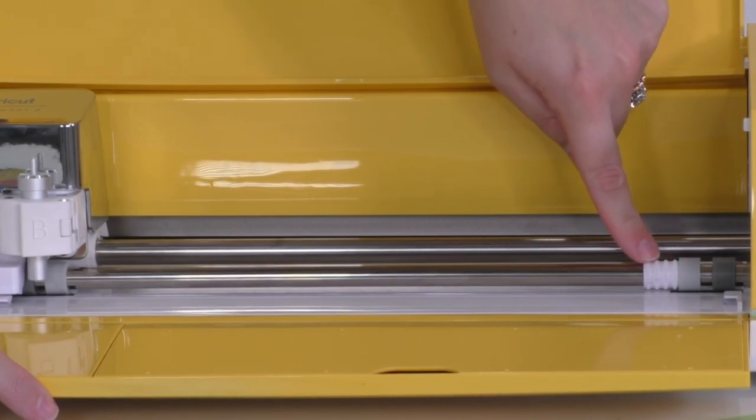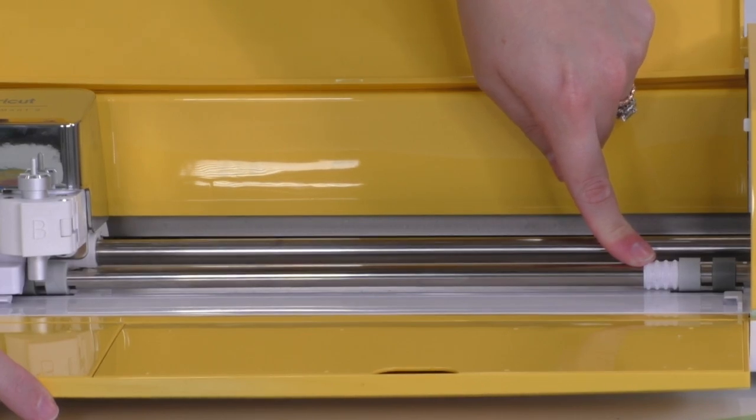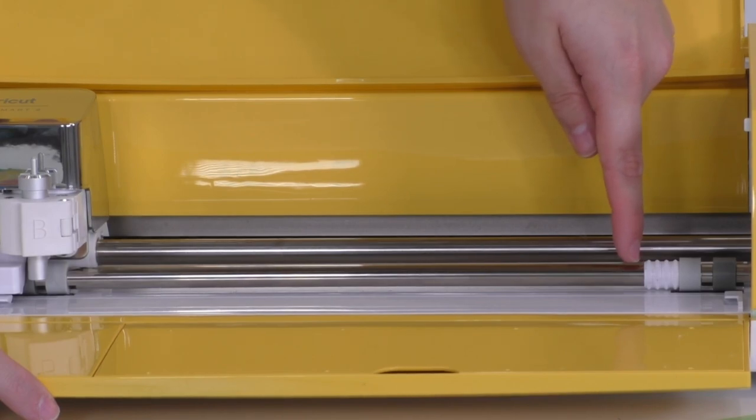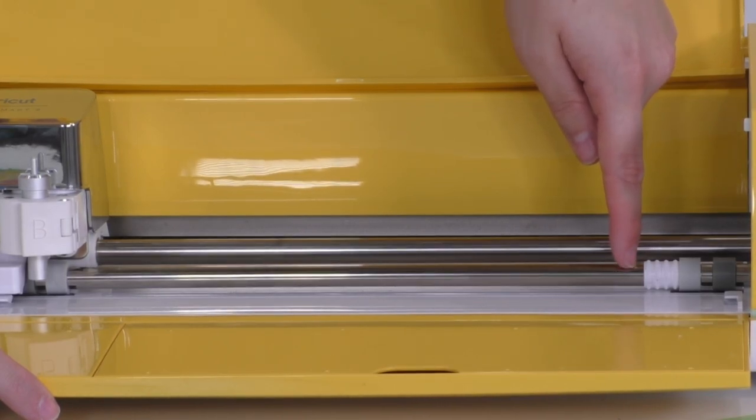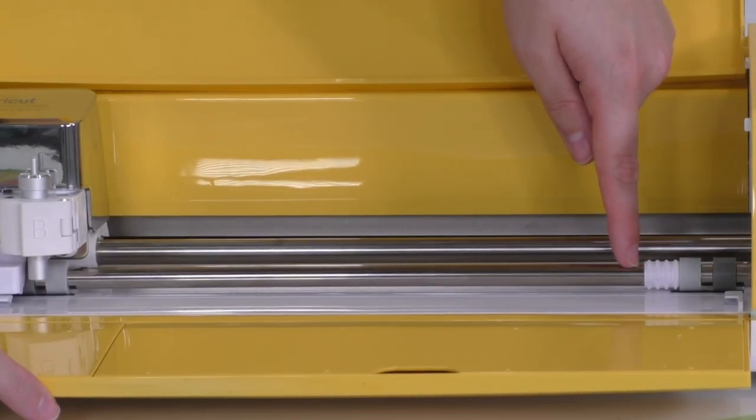That is because once you move your star wheels over to the side, that takes up about an inch of space. And because you move those over to the side when working with chipboard, you can't have your material go underneath those star wheels. So that is why Cricut has to make it to stop right about here. So that is why your chipboard is 11 inches wide. What an amazing fun fact.